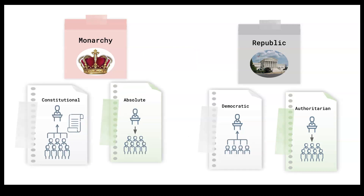This is a useful framework for trying to understand how we classify different regimes. You can start with: is it a monarchy or is it a republic? Who is in charge — a president or a king or queen? Then within that, how does the power flow? Is it top-down from the leader, or is it bottom-up where there is democratic participation from the people?